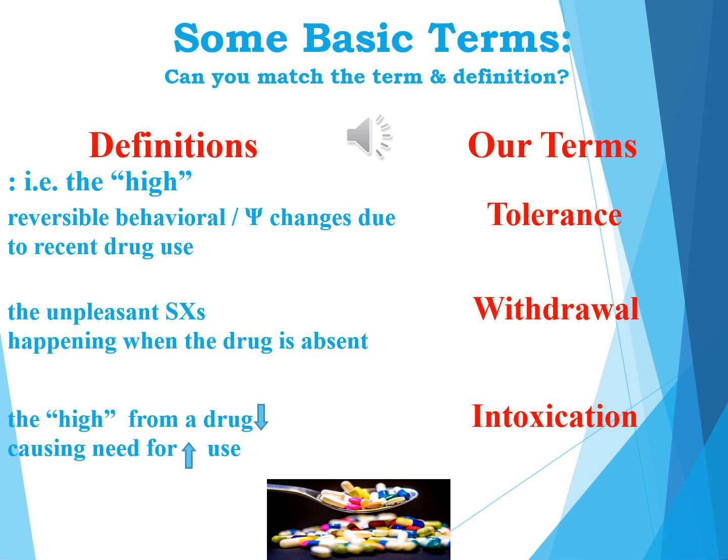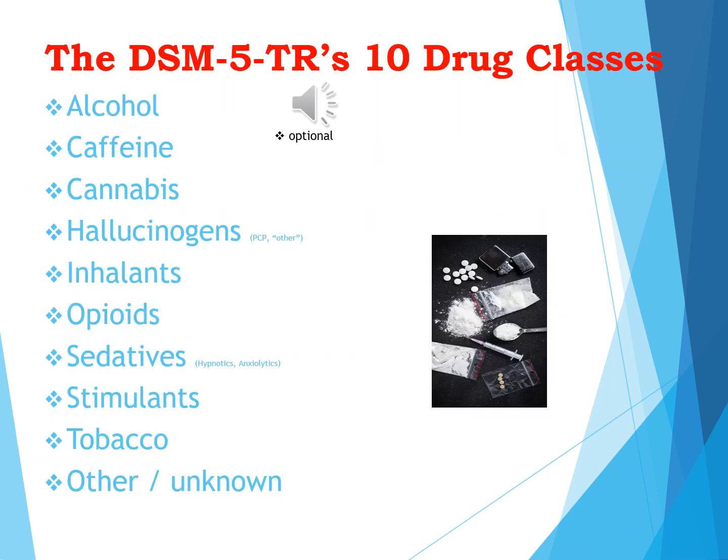On the next slide we'll consider the major drug classes. The DSM-5 TR version recognizes 10 drug classes: alcohol, caffeine, cannabis, hallucinogens, inhalants, opioids, sedatives, stimulants, tobacco, and other or unknown agents.